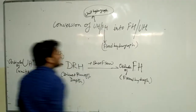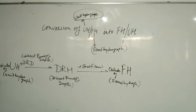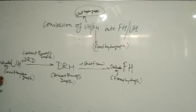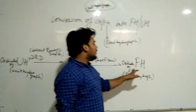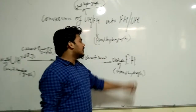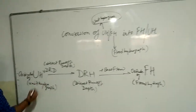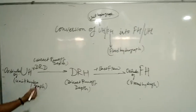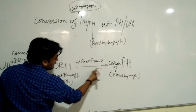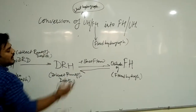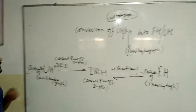This is the conversion of coordinates of the unit hydrograph for a given duration into the coordinates of the flood hydrograph for the same given duration. Now moving backwards, we get the conversion of the flood hydrograph back into the unit hydrograph.